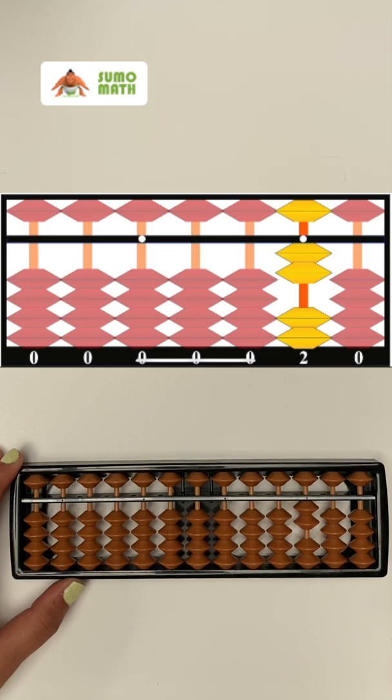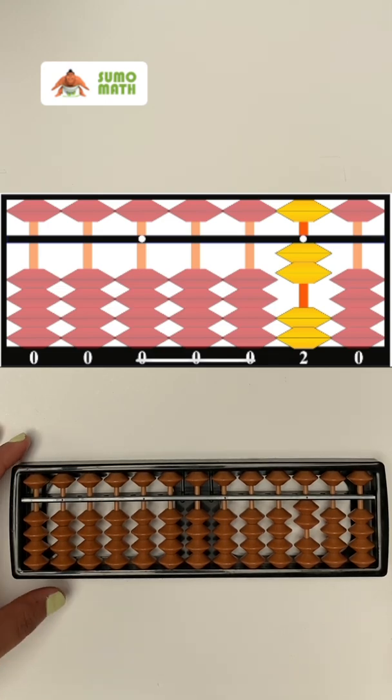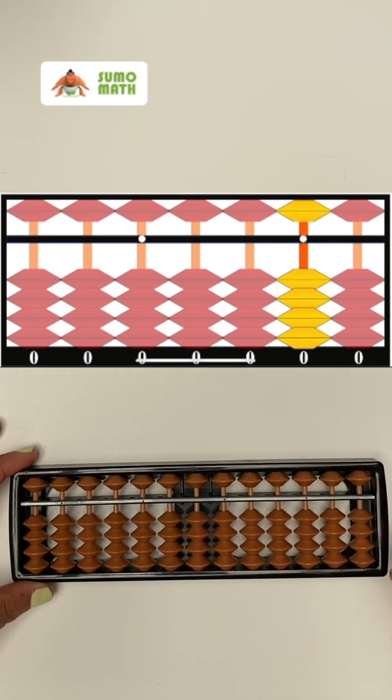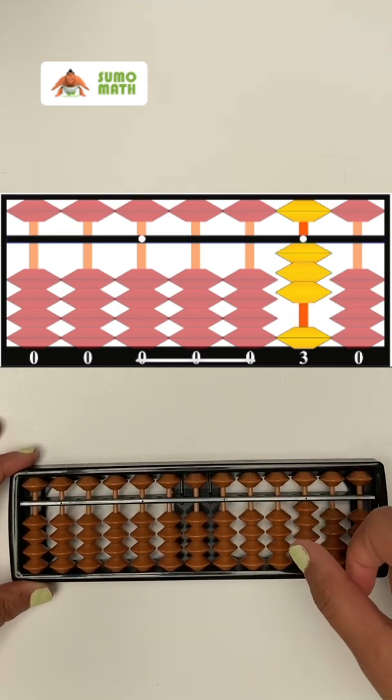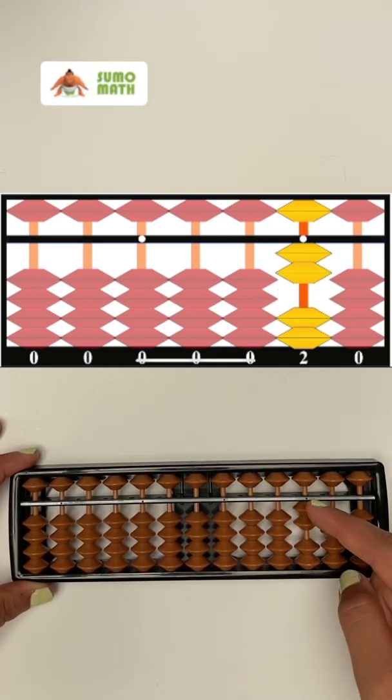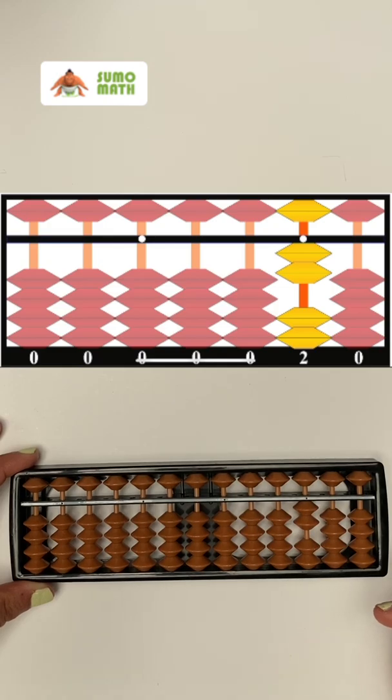Now, let's subtract. 3 minus 1. Clear your Sorbonne. Just put 3 beads up and then take one away from it and read the answer. That's right, 2. 1, 2. Subtraction done.